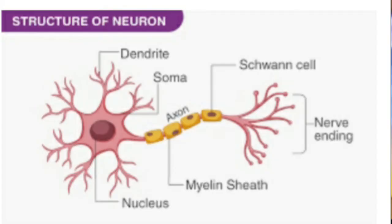As you know, our nervous system is made up of nerve cells. Nerve cells are also known as neurons. Neurons are the structural and functional units of the nervous system, and it is the longest cell of the human body.